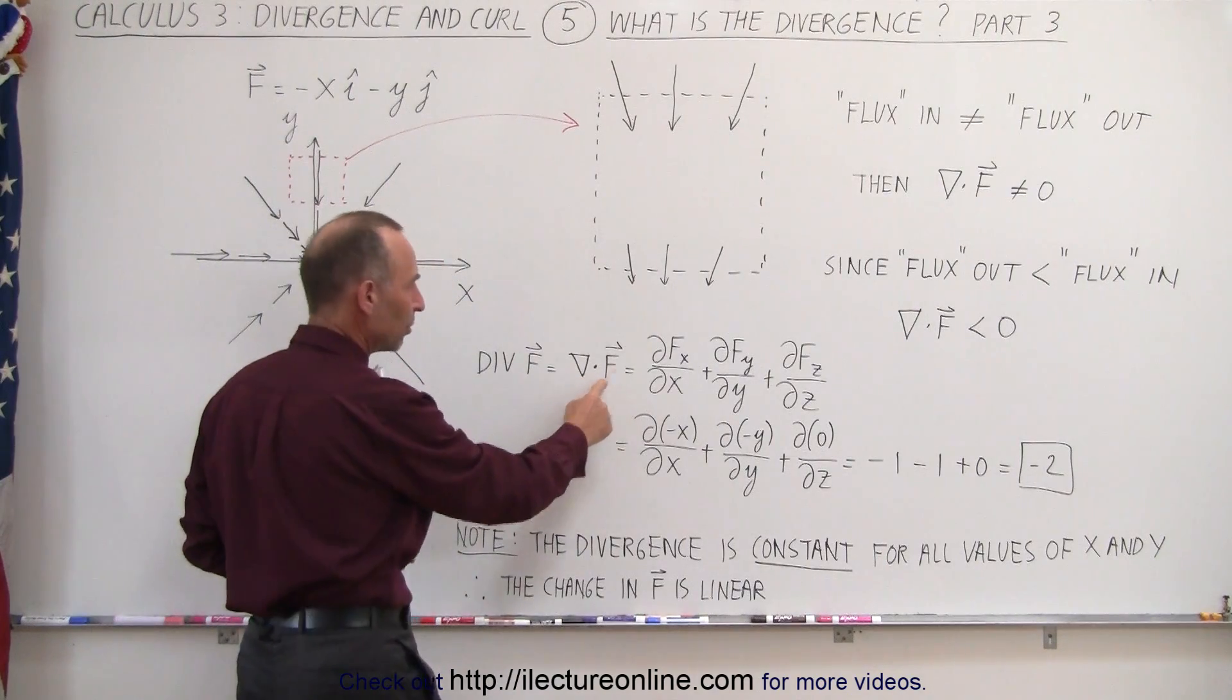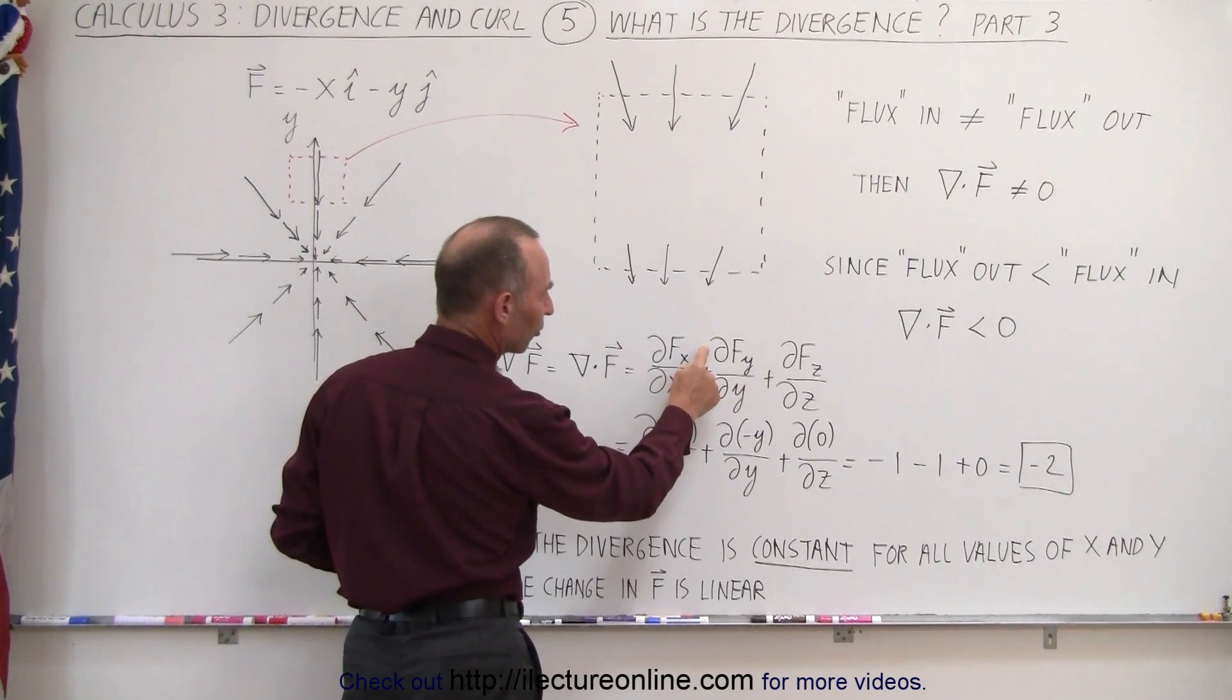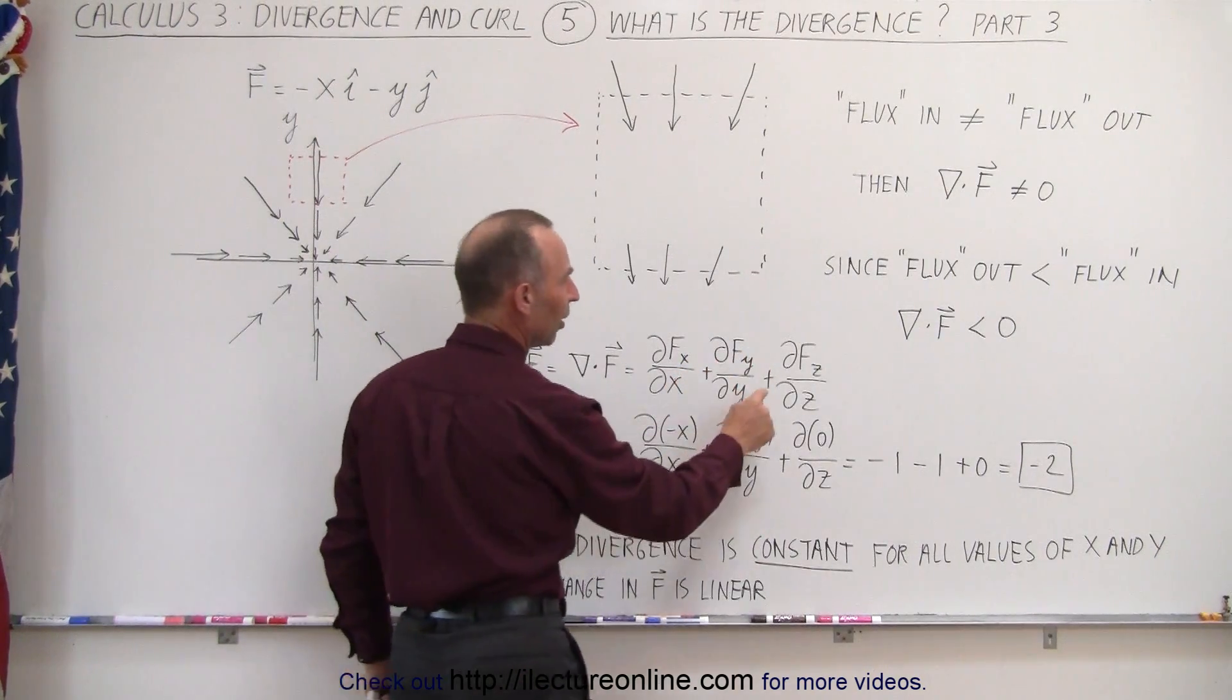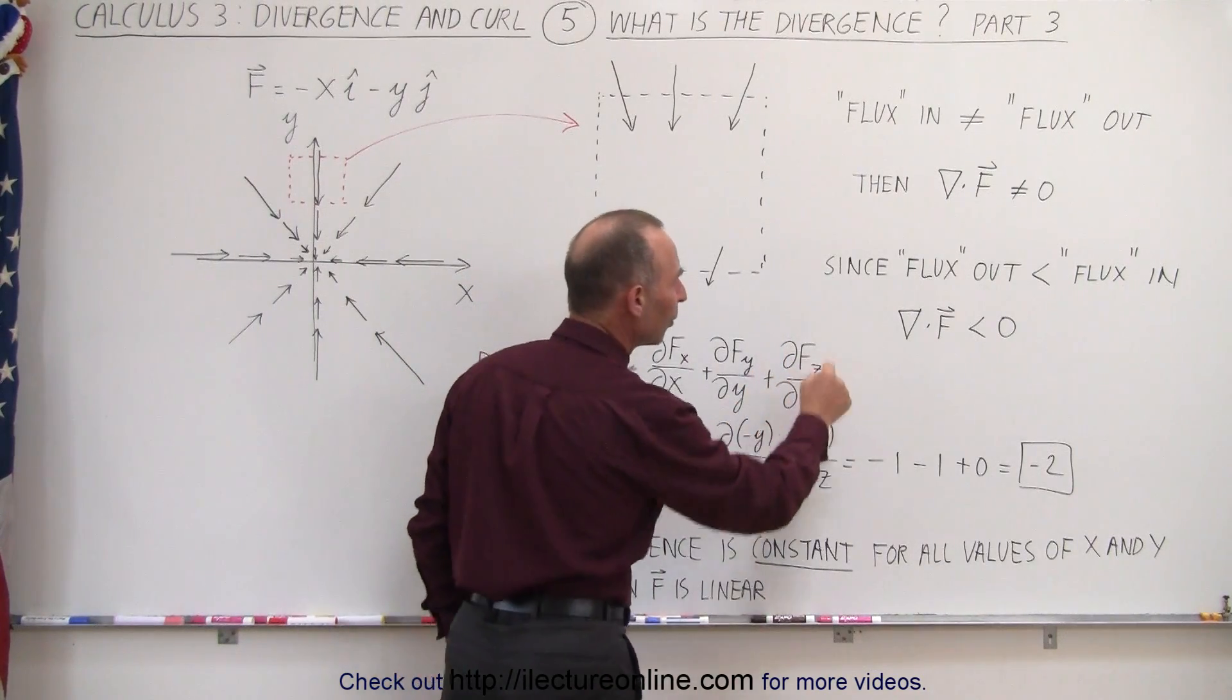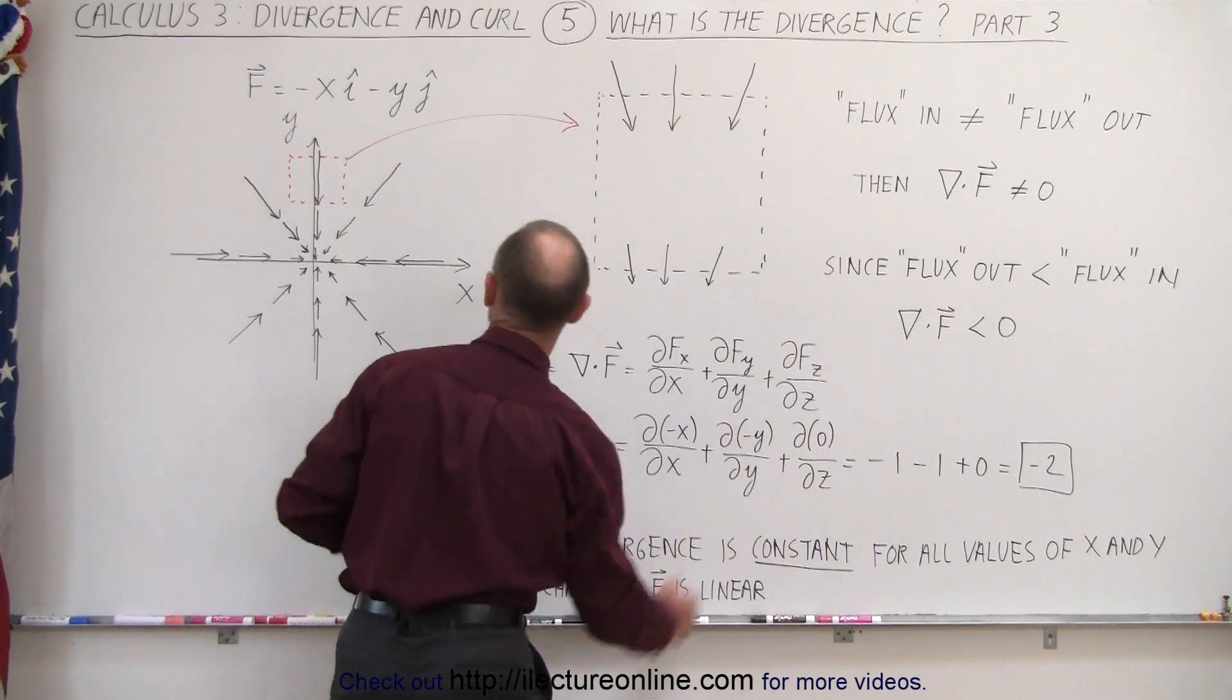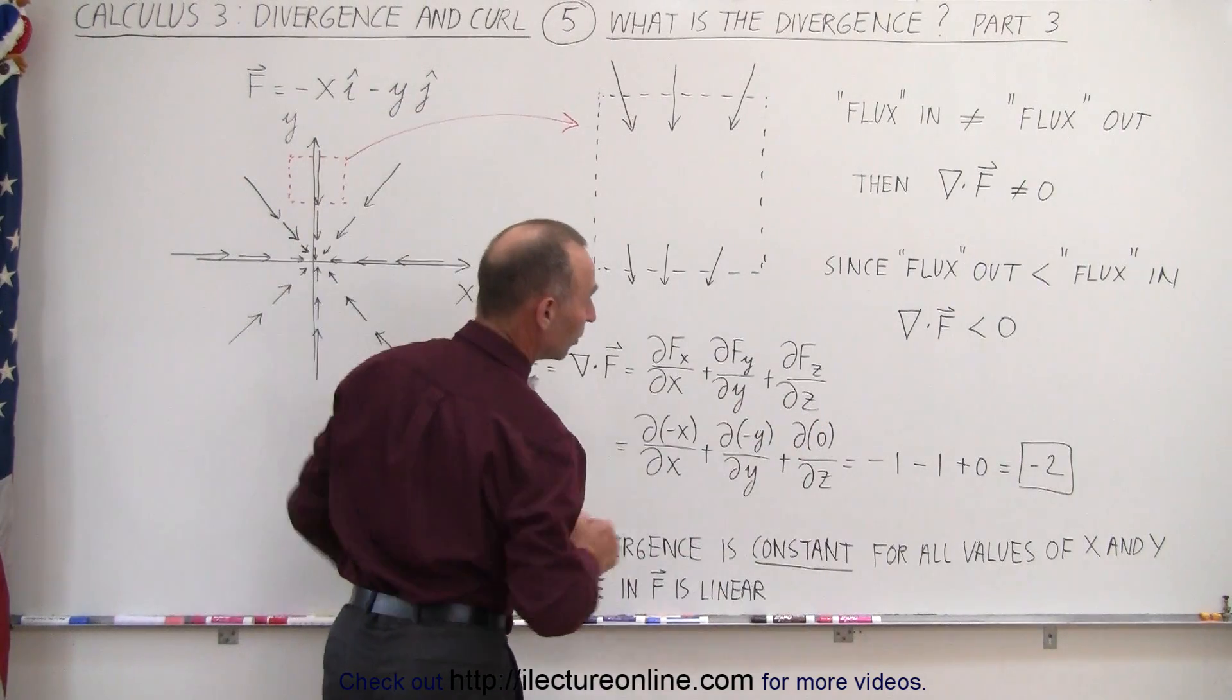which is defined as being the partial with respect to x of the x component of the vector field, plus the partial derivative with respect to y of the y component, plus the partial derivative with respect to z of the z component. And then if we put in the x, the y, and the z component—there's your x component, there's your y component, the z component is zero.